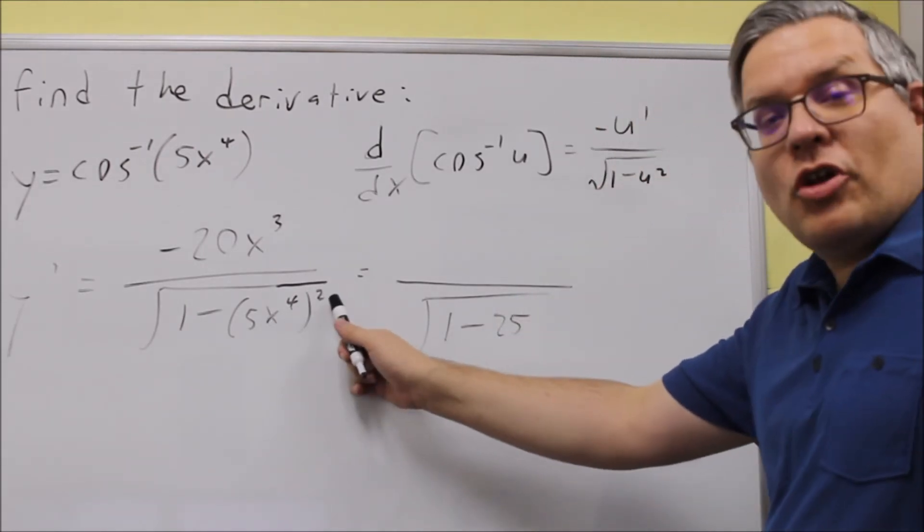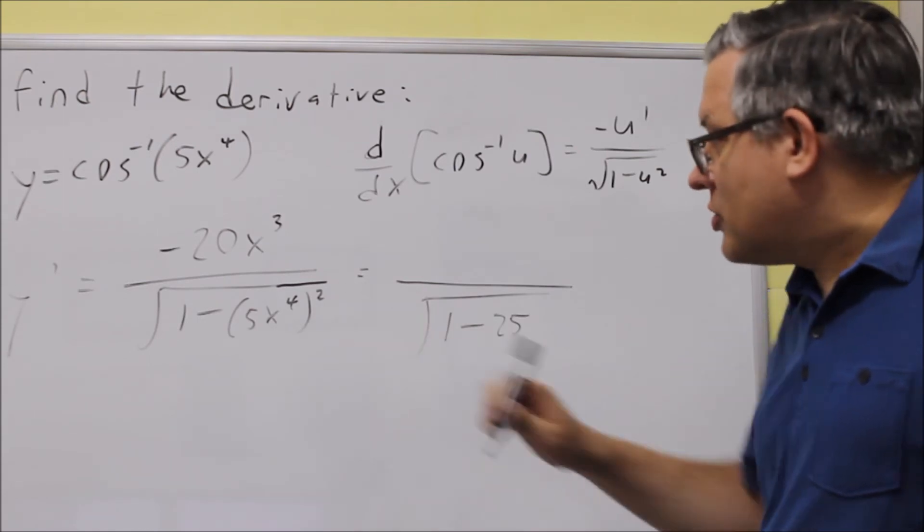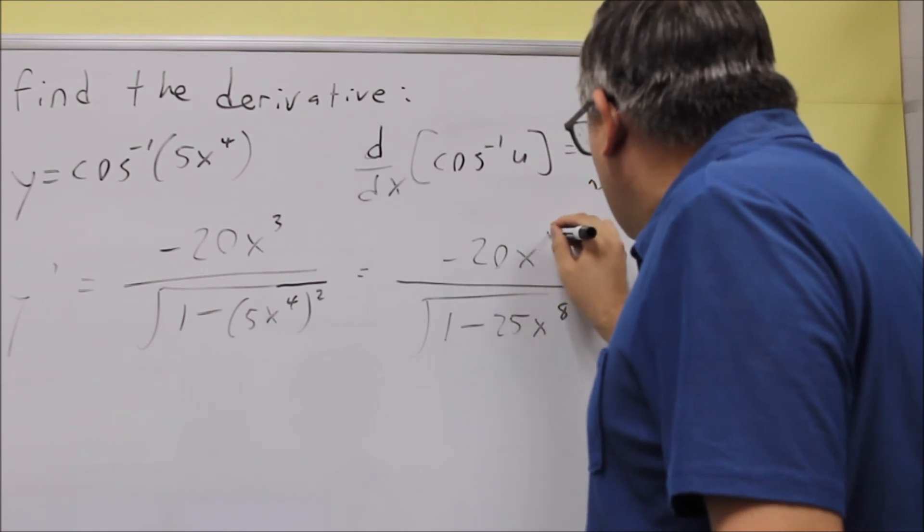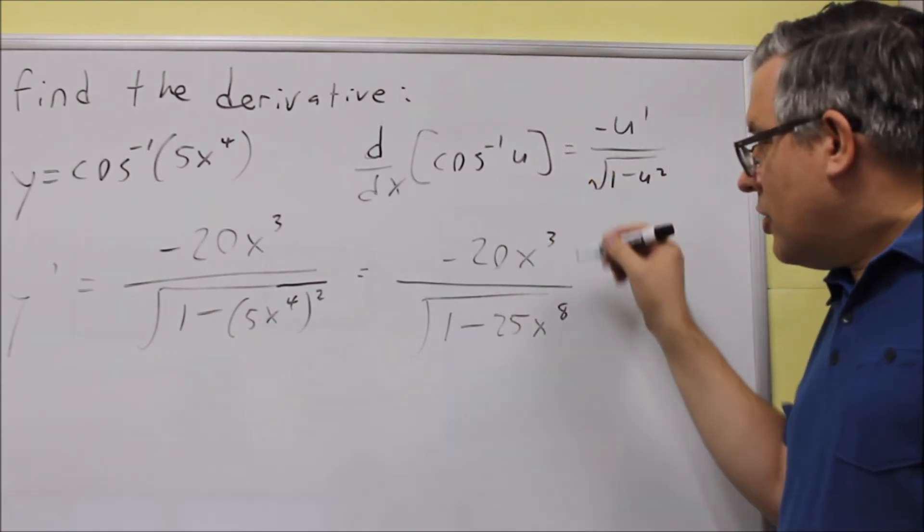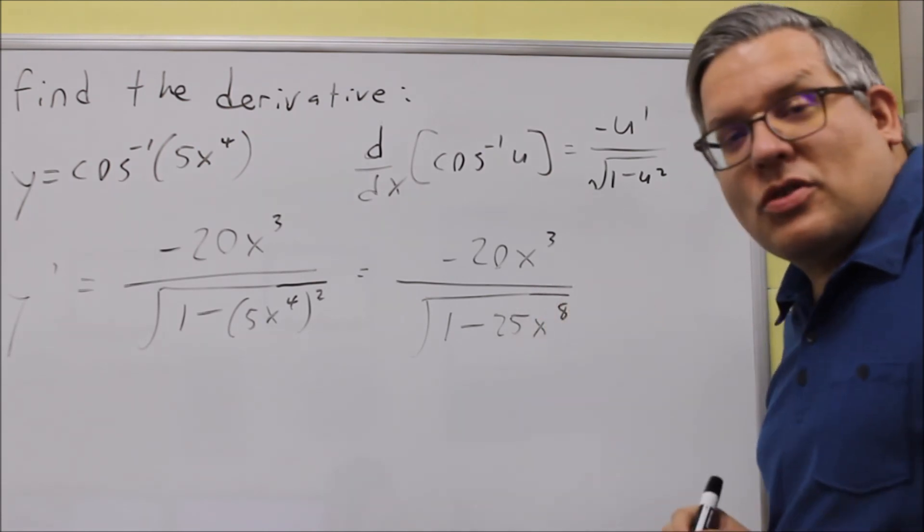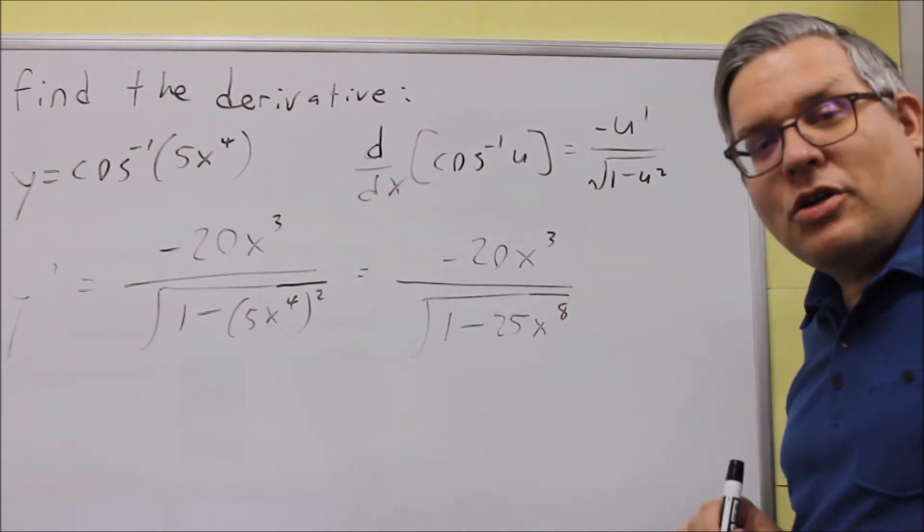And then when you raise the power to another power, you're going to multiply the exponents, and so it's going to give you x to the eighth. And then we just have negative 20x cubed on top. And there's nothing more that we can do or nothing more we need to do as far as simplifying that. So this will be your final answer.